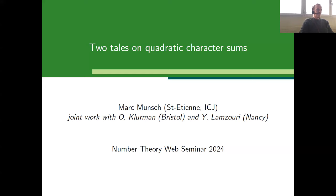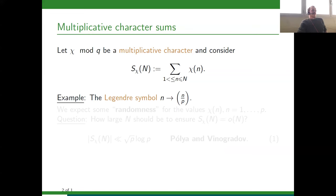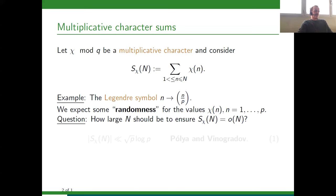The object we will look at is a character modulo q — we can take q prime — and we look at partial sums of characters. The classical example is the Legendre symbol: for a prime p, it is plus one if n is a square modulo p and minus one if n is not a square modulo p. We study averages of these quantities up to some large N and ask whether there is cancellation in this sum.